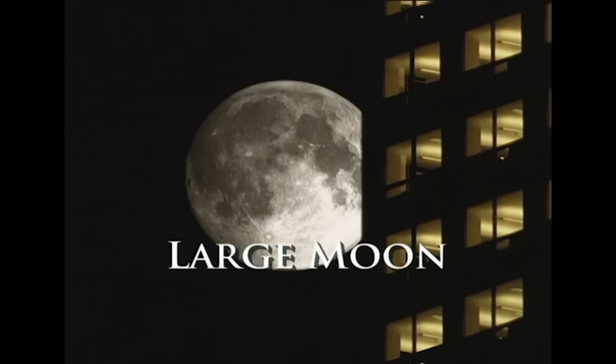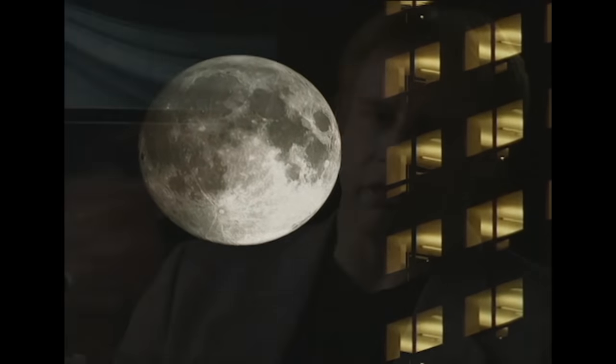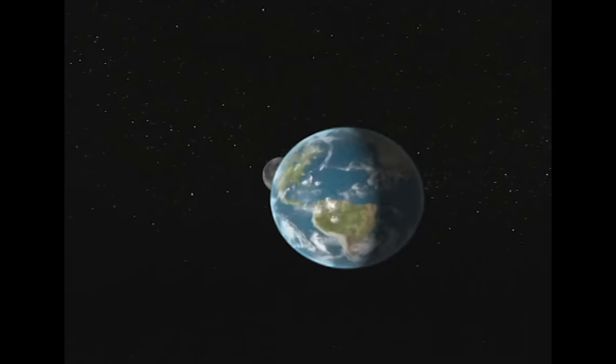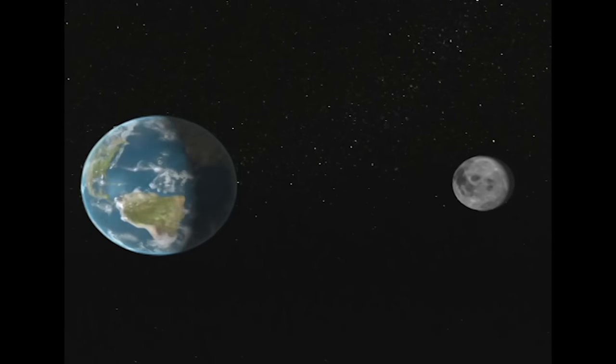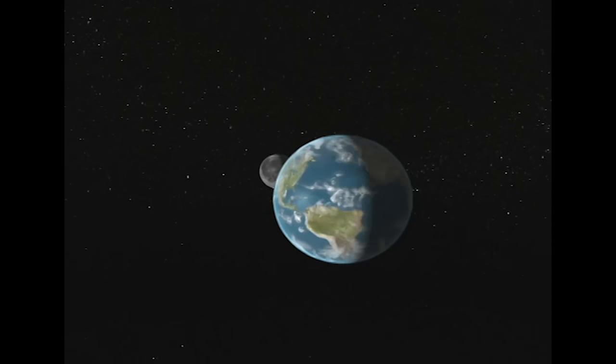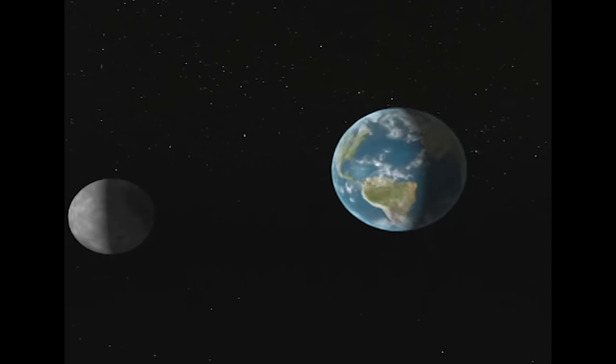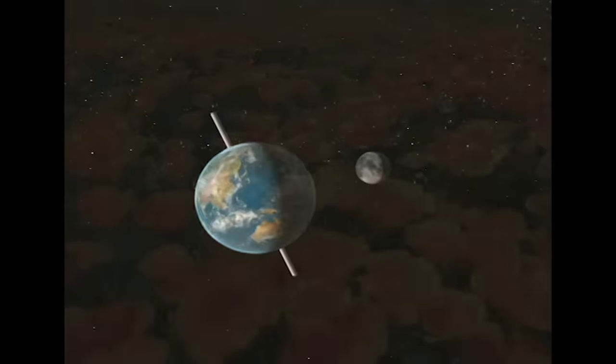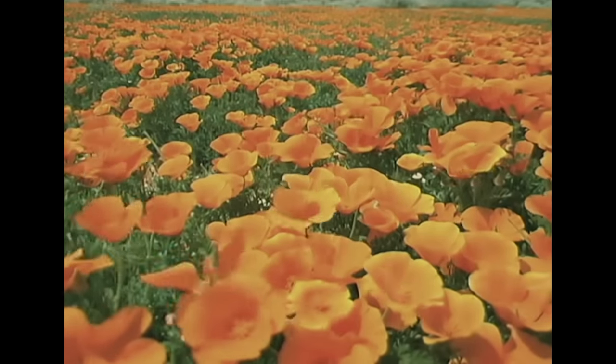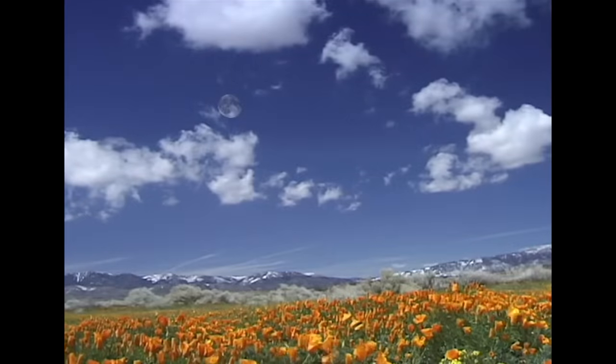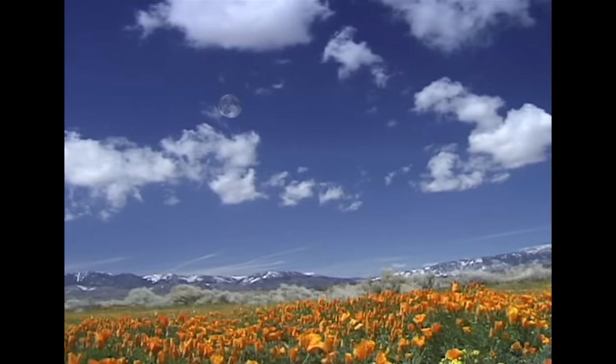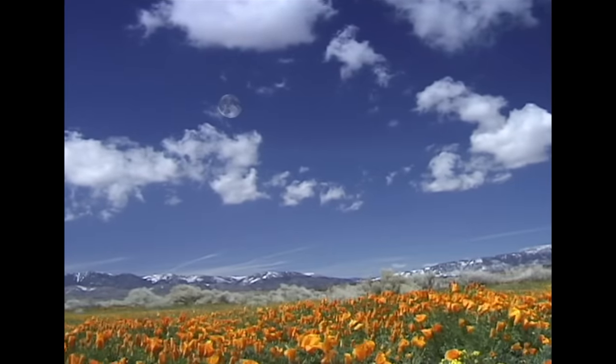For a size of a planet like Earth, our moon is big. The current thinking is that if our moon didn't exist, neither would we. One-fourth the size of the Earth, the moon's powerful gravitational pull stabilizes the angle of its axis at a nearly constant 23 and a half degrees. This ensures relatively temperate seasonal changes, and the only climate in the solar system mild enough to sustain complex living organisms.